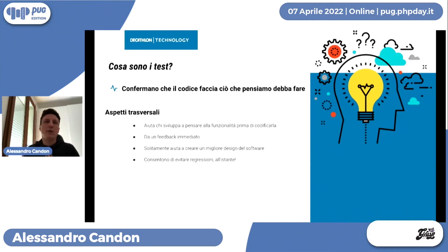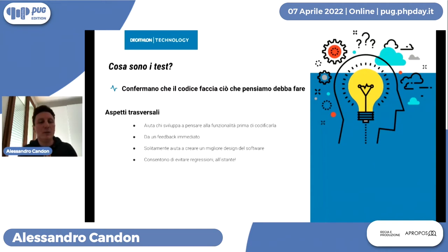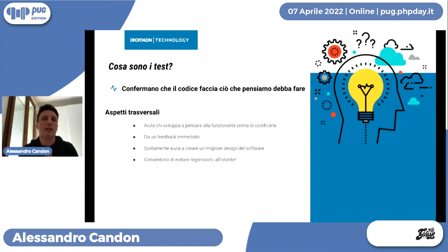L'ultimo aspetto, ma non meno importante, è che i test aiutano a evitare le regressioni. Immaginate di dover cambiare una libreria o refactorizzare un algoritmo: avendo una batteria di test ben scritta e funzionale, potete vedere le eventuali regressioni nel codice praticamente all'istante, semplicemente eseguendo la batteria di test.